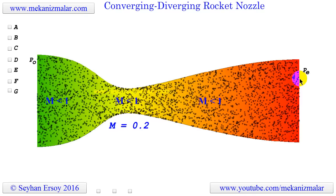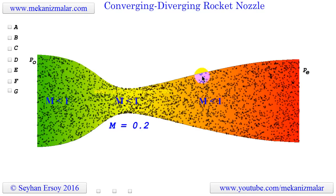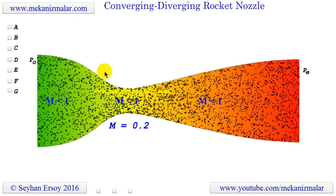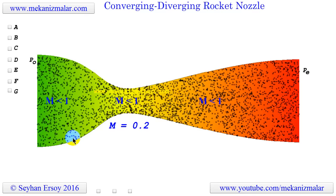Since the velocity is dropping in the diverging section, we should not use a converging-diverging nozzle. Instead, only use the converging nozzle for the rocket engines.